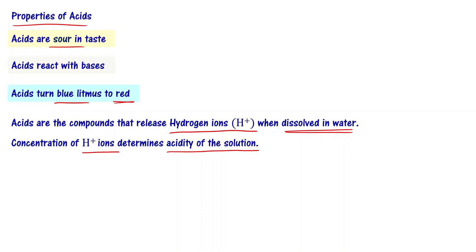There are two types of acids: strong acids and weak acids. Strong acids are something like hydrochloric acid HCl, sulfuric acid, and nitric acid. They will release more number of hydrogen ions when dissolved in water. Weak acids like formic acid and acetic acid are called organic acids, and they release only a limited number of H+ ions when dissolved in water.